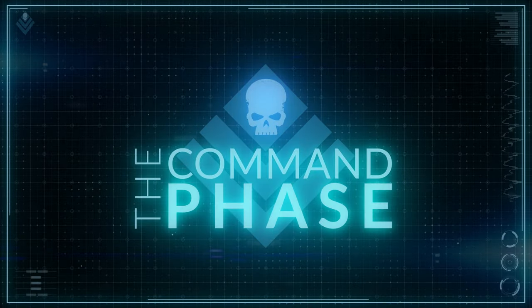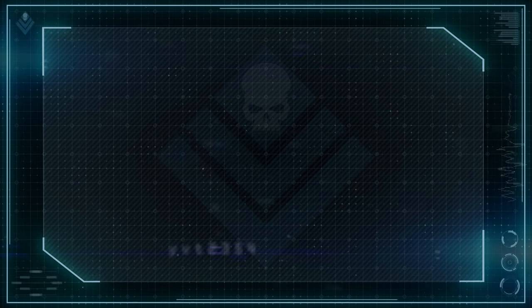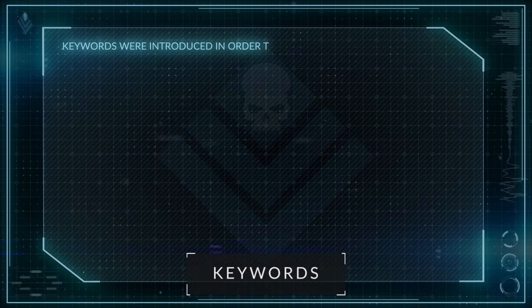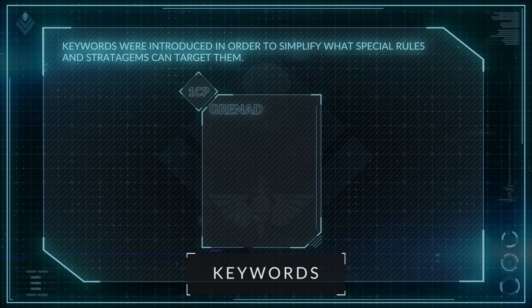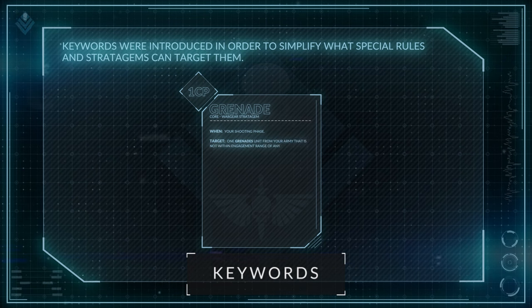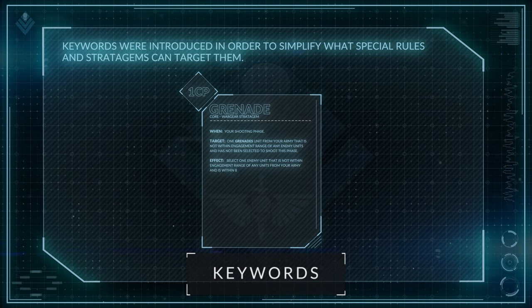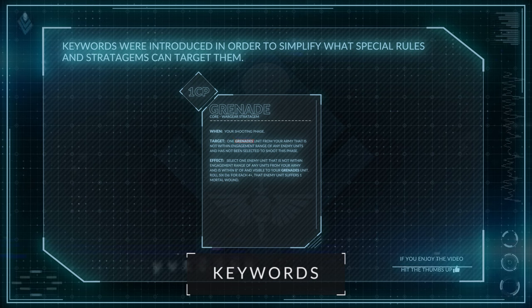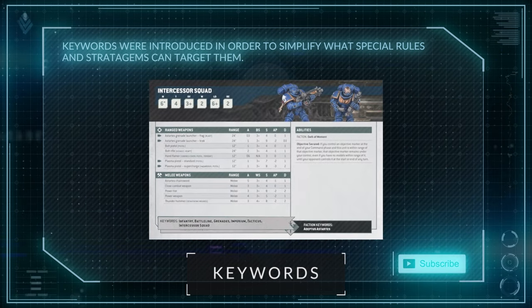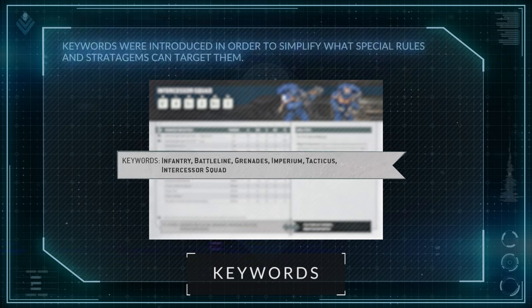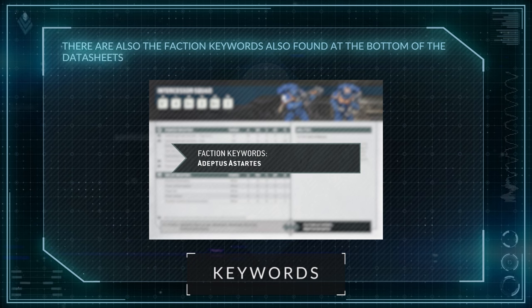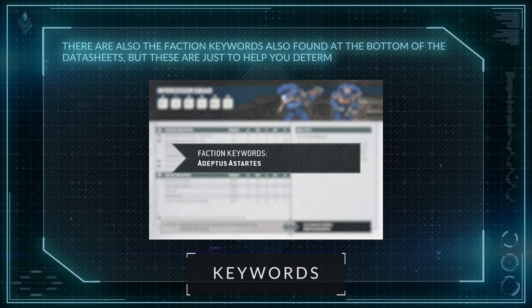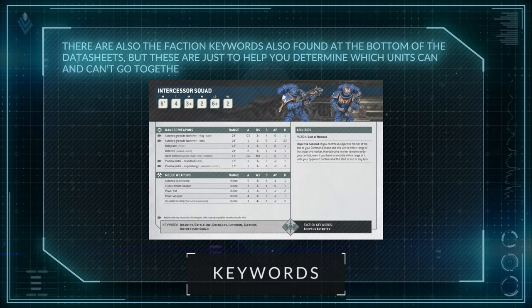Hello and welcome to the Command Phase. My name is Mark and thank you so much for joining me. With the latest version of 10th edition 40k, keywords were introduced in order to simplify what special rules and stratagems can target them. For example, the grenade core stratagem can only be utilised by a unit with the grenades keyword, which is highlighted in the stratagem under the target. These keywords are found at the bottom of each of the datasheets for every unit. There are also faction keywords found at the bottom of the datasheet.